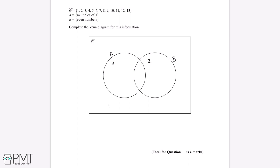4 is an even number but is not a multiple of 3. 5 is an odd number which is not a multiple of 3. 6 is a multiple of 3 and is an even number, so we'll place it where A and B overlap.